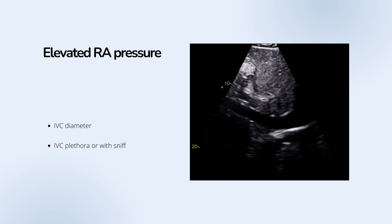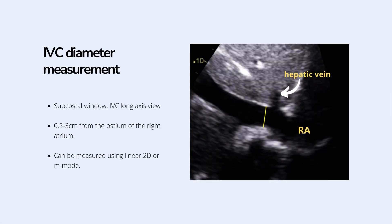When right-sided filling pressures are elevated, normal inspiratory collapse of the IVC is reduced. Next, measuring the IVC diameter.